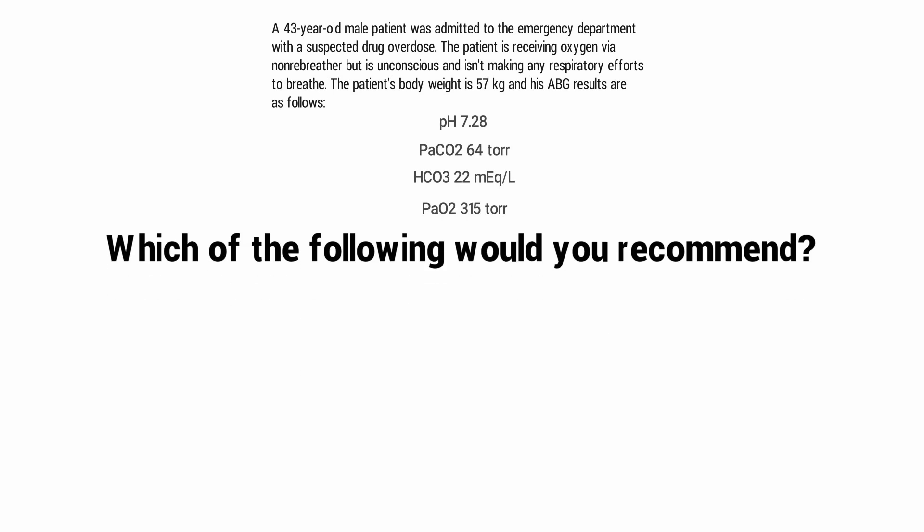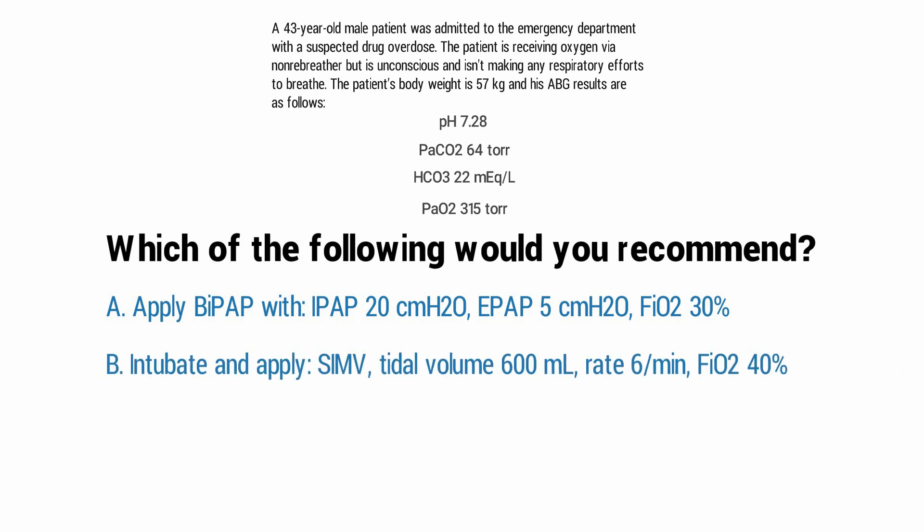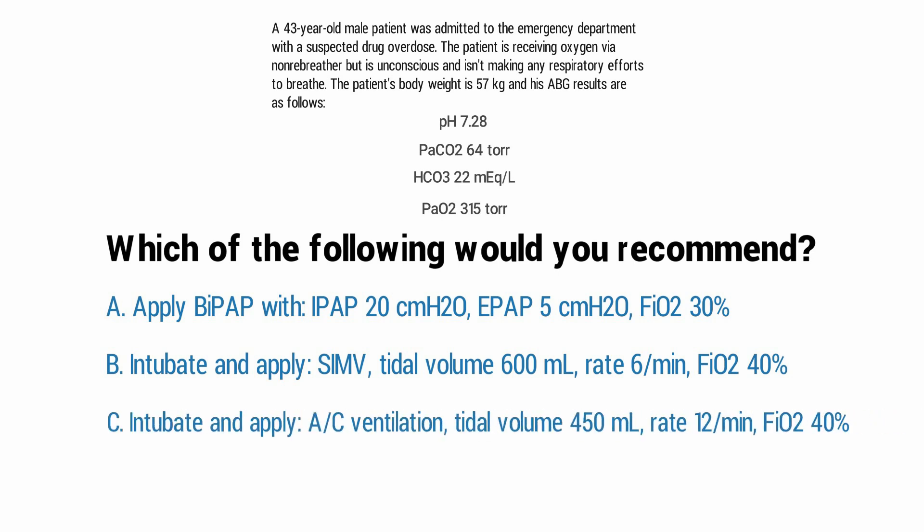Which of the following would you recommend? A. Apply BiPAP with an IPAP of 20, an EPAP of 5, and an FiO2 of 30%. B. Intubate and apply SIMV with a tidal volume of 600, a rate of 6, and an FiO2 of 40%. C. Intubate and apply assist control ventilation with a tidal volume of 450, a rate of 12, and an FiO2 of 40%. Or D. Apply CPAP at 10 centimeters of water pressure with an FiO2 of 100%.